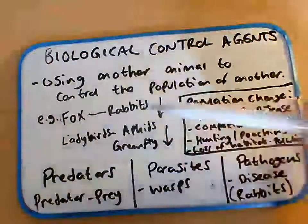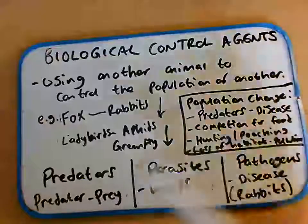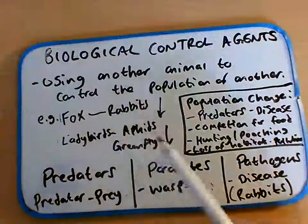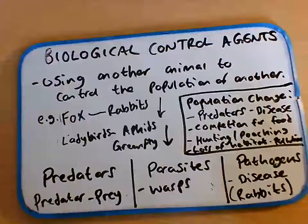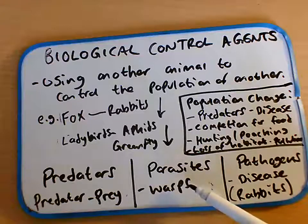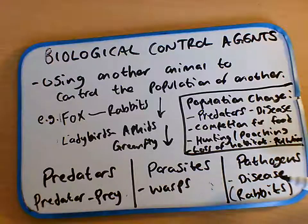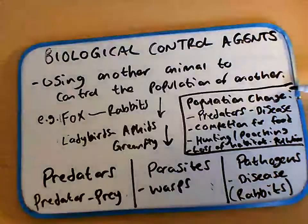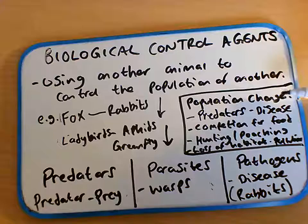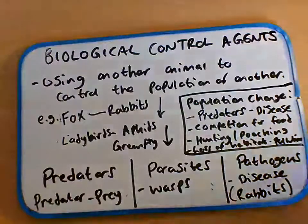So a biological control agent is where we use another living organism to control the population of another. It could be a fox killing rabbits, ladybirds eating insects, parasitic wasps, or a particular pathogen causing disease. But we must be aware that populations naturally fluctuate due to various different factors.